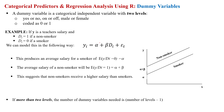Welcome. In this video lecture, I am going to talk about regression analysis using R when we have categorical predictors, or we can say categorical independent variables. In order to deal with categorical independent variables, we can take the help of dummy variables. What dummy variables mean is we are going to code that categorical variable.